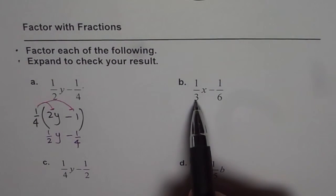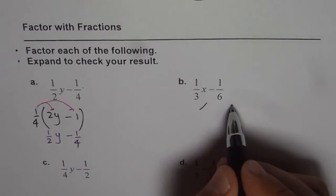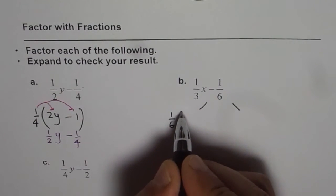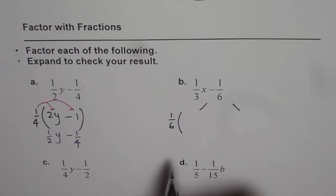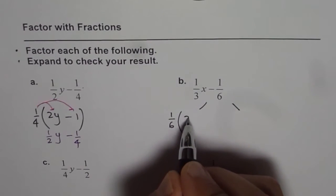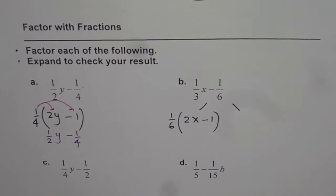You could also factor 1/3. In that case, you multiply by three and get 1/2. Let me do both ways. If I factor 1/6, which I prefer, I have to multiply each term by six. So I get 2x minus 1.